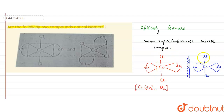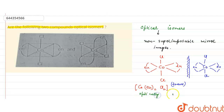Because they are placed trans to each other, the mirror images are superimposable over each other. So this compound is optically inactive — its mirror image is superimposable.